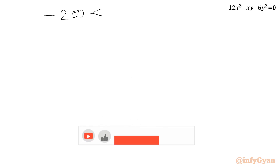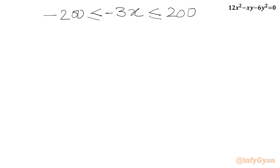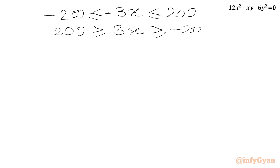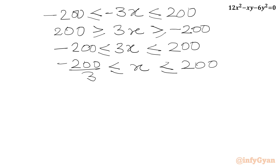Multiplying by minus 1 reverses the inequalities, giving: minus 200 ≤ 3x ≤ 200. Dividing by 3, we get: minus 200/3 ≤ x ≤ 200/3. Since x must be divisible by 2, we substitute x equals 2n, giving: minus 200/3 ≤ 2n ≤ 200/3. Dividing by 2: n ≥ minus 100/3.